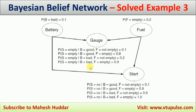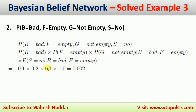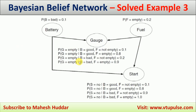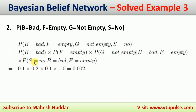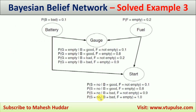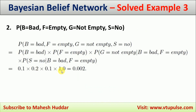The table gives P(G=empty | B=bad, F=empty) = 0.9, so P(G=non-empty) = 1 minus 0.9 = 0.1. For P(S=no | B=bad, F=empty), we are expecting S=no, which is directly 1.0. So the calculation is P(B=bad) = 0.1, P(F=empty) = 0.2, P(G=non-empty) = 0.1, P(S=no) = 1.0. Multiplying: 0.1 × 0.2 × 0.1 × 1.0 = 0.002. This is the probability for the second question.